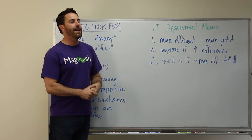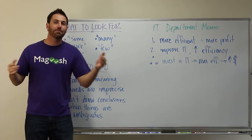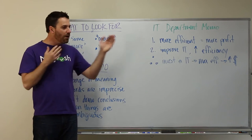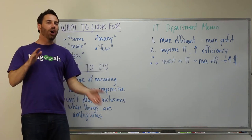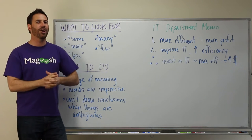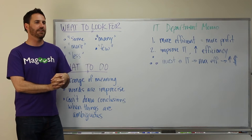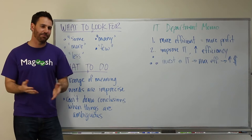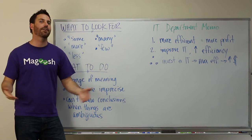For example, if we're talking about the people who work at Magoosh and I say more people at Magoosh like chocolate chip cookies than oatmeal raisin cookies, I've provided you with some detail, but it's not a lot of detail because you don't know what the breakdown is.